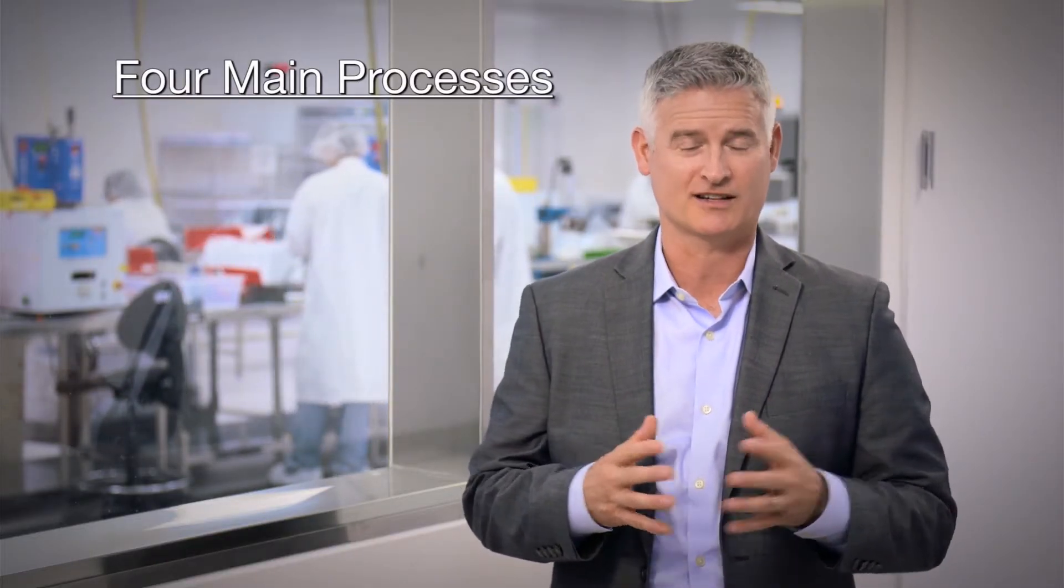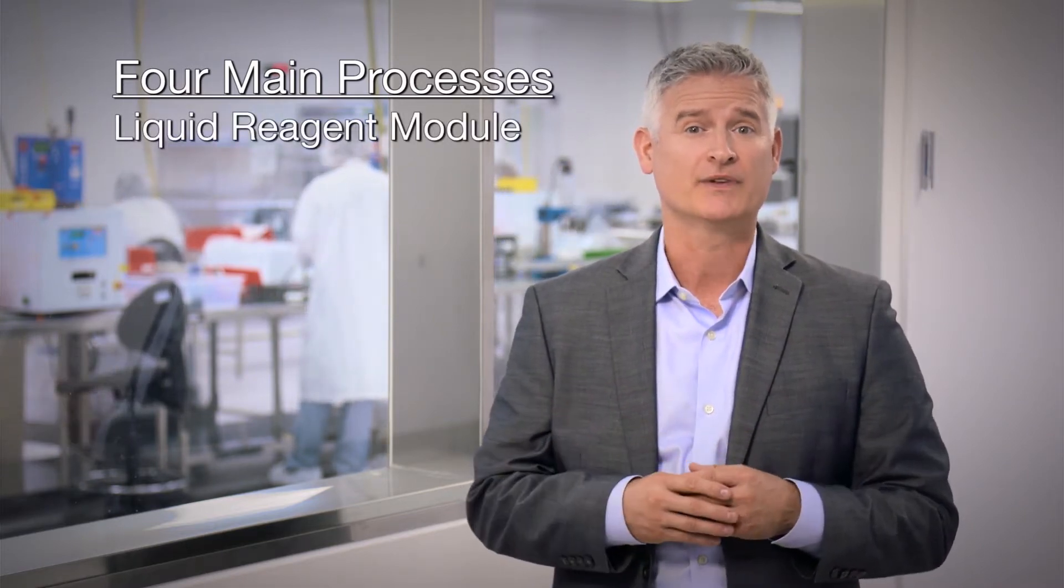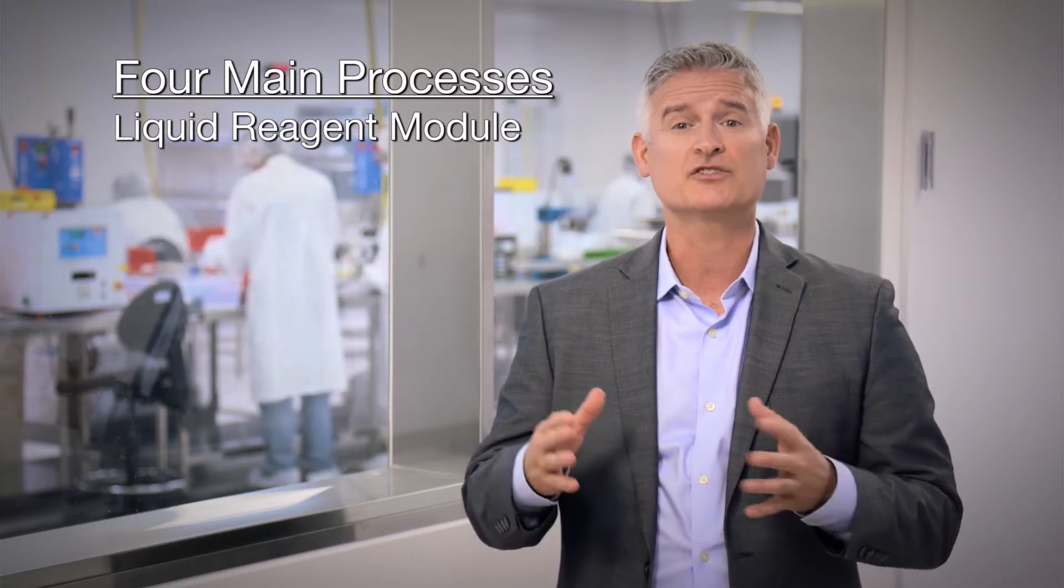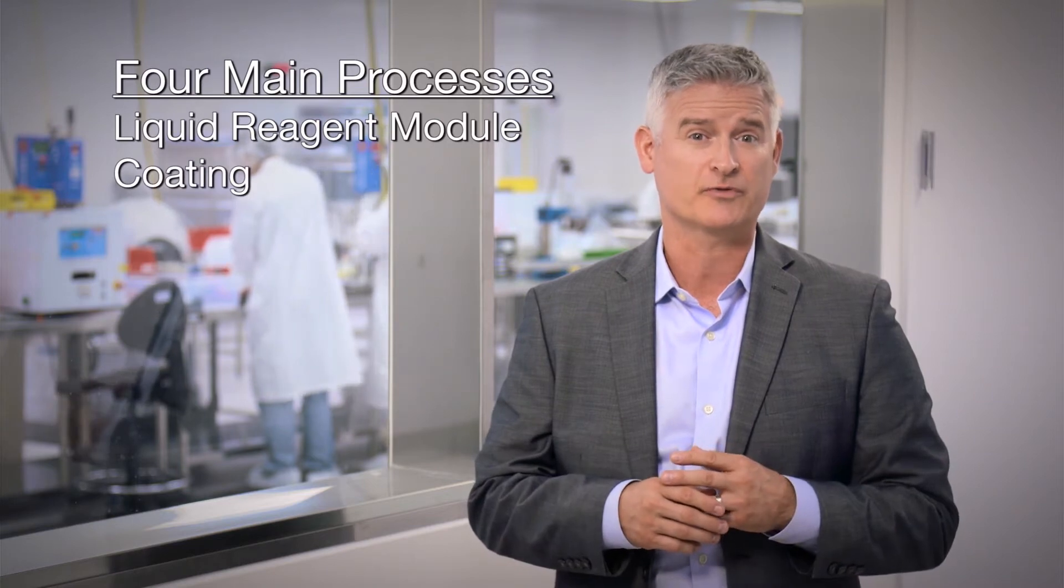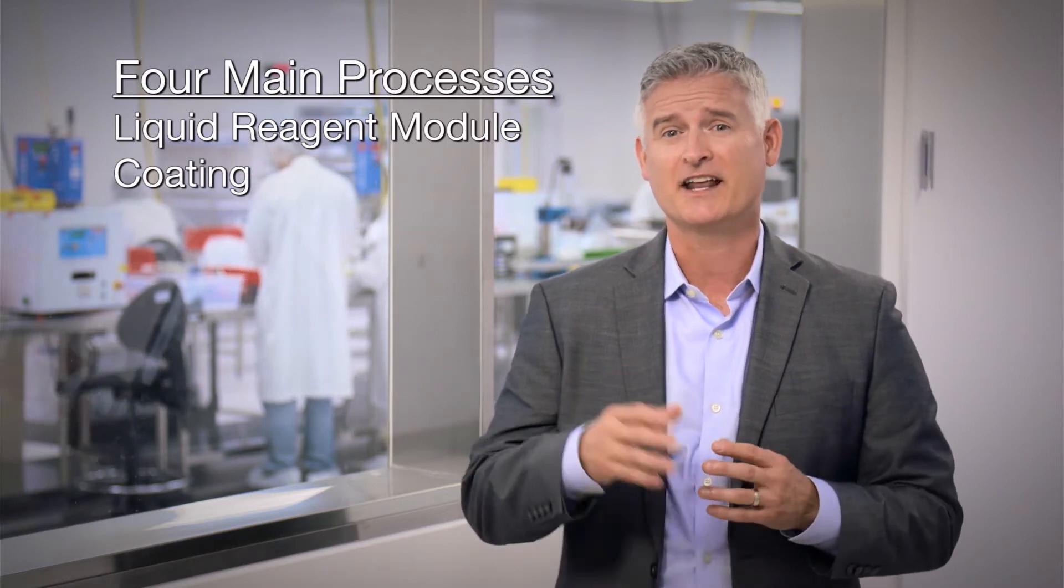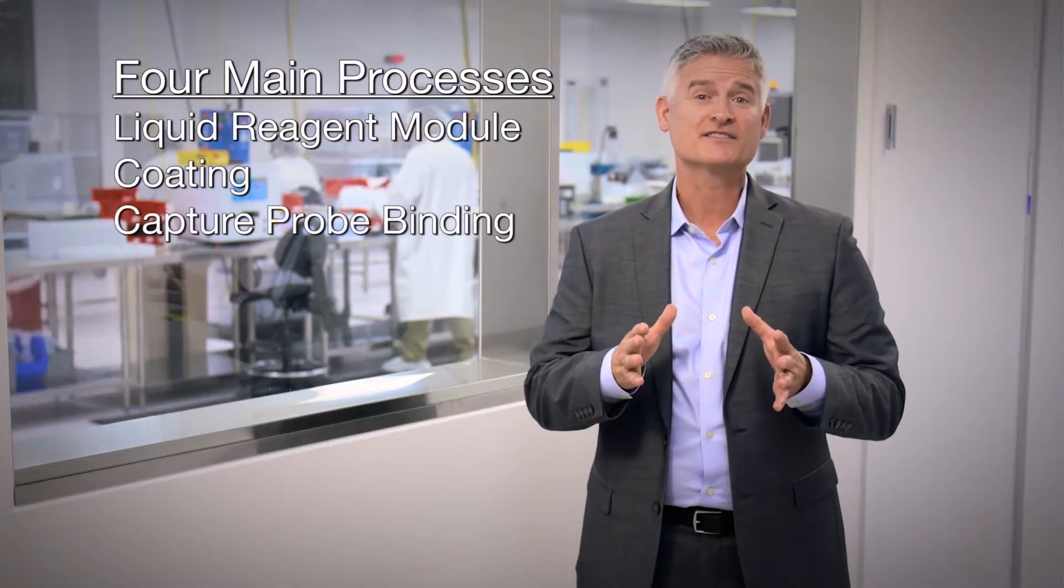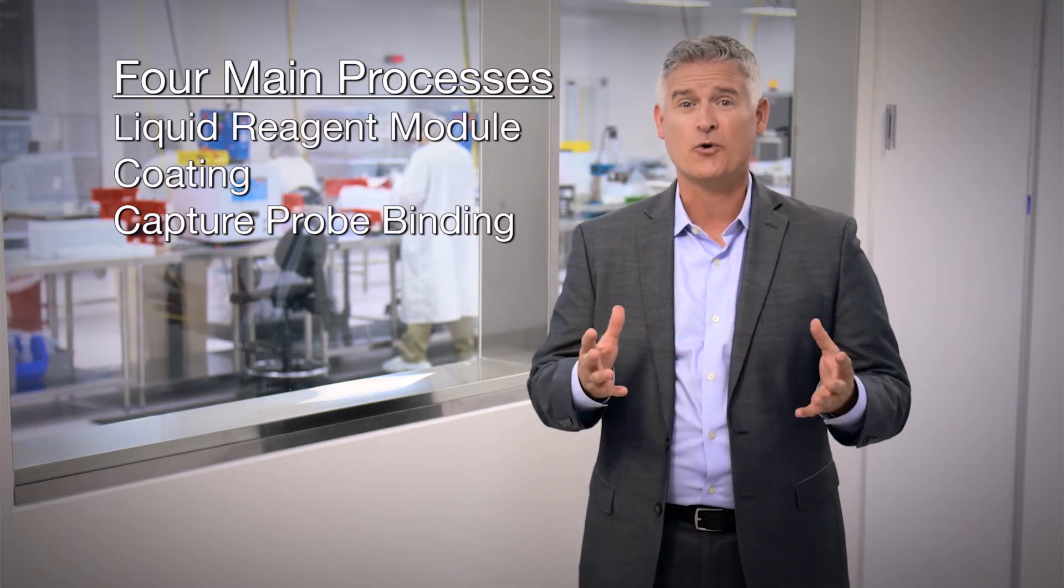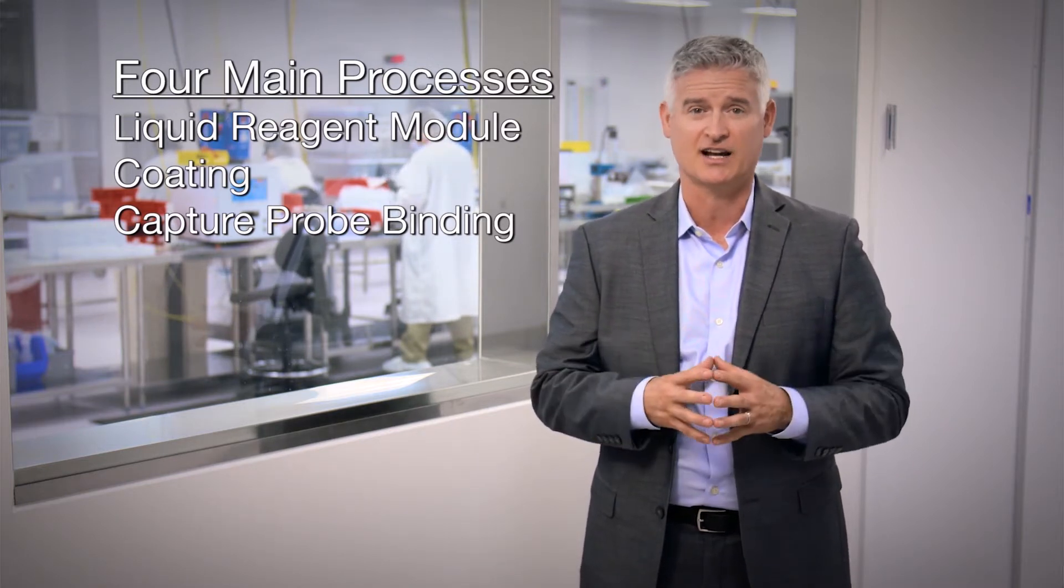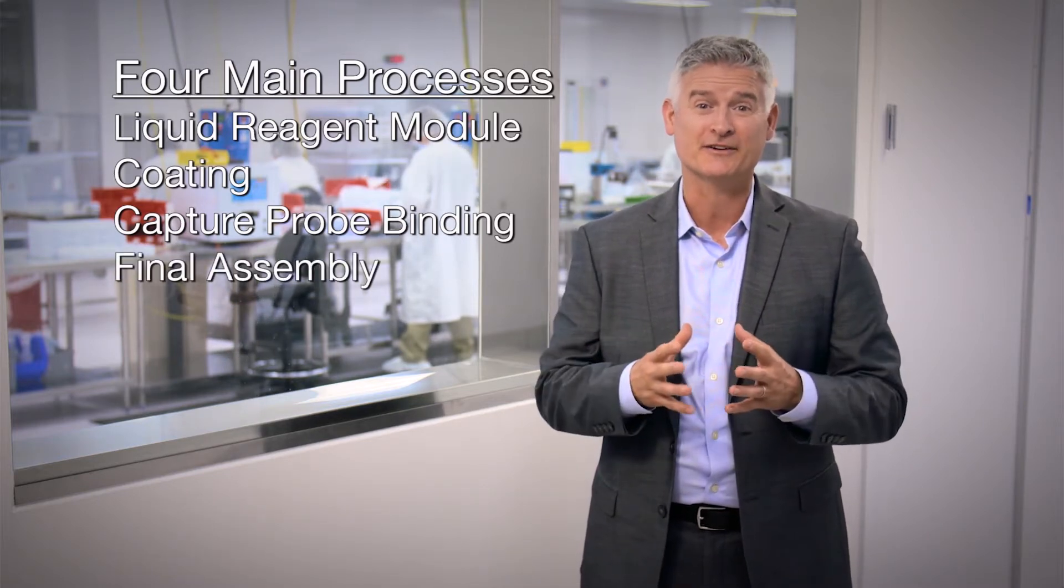As part of our tour today, we'll highlight four main subassembly processes. First is assembly of our liquid reagent module or LRM, that contains the liquid reagents used in all of our assays. Second is the coating of ePlex cartridge components for the Electrowetting Microfluidics technology that enables ePlex's sample-to-answer capability. Third is the binding of capture probes onto the electrodes of the printed circuit board, that is the core of Genmark's proprietary eSensor detection technology. And lastly, we'll show you how all these components come together in the final product.